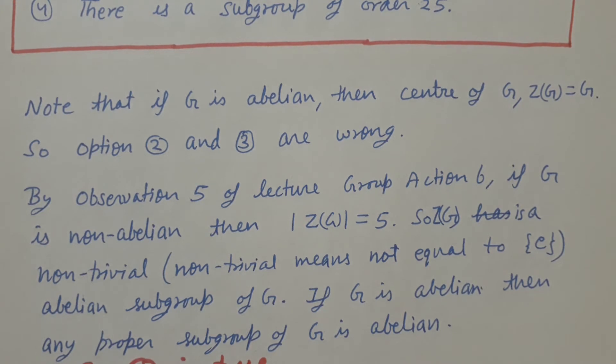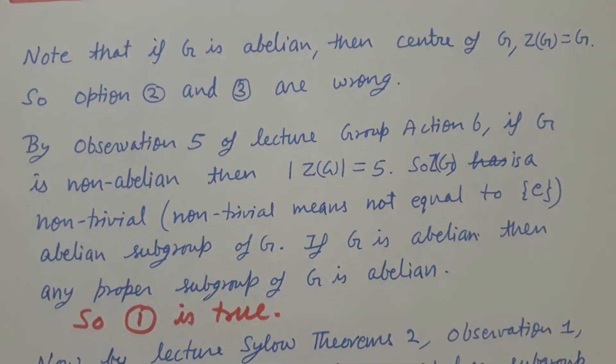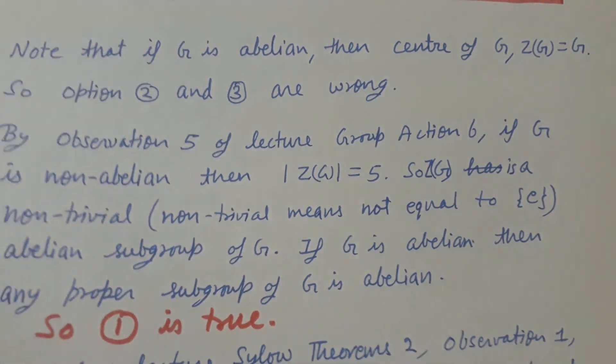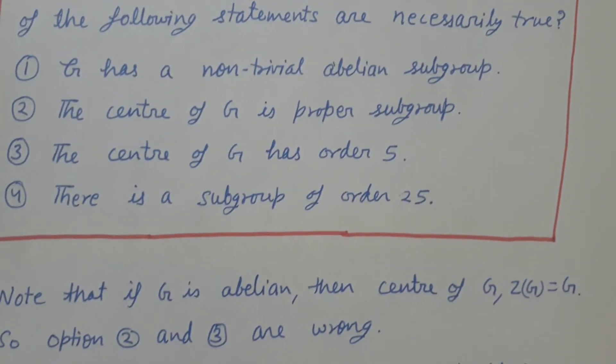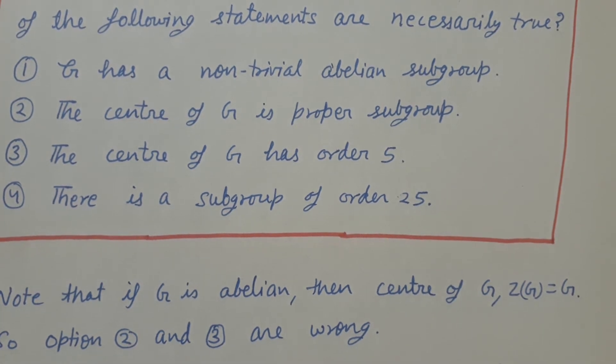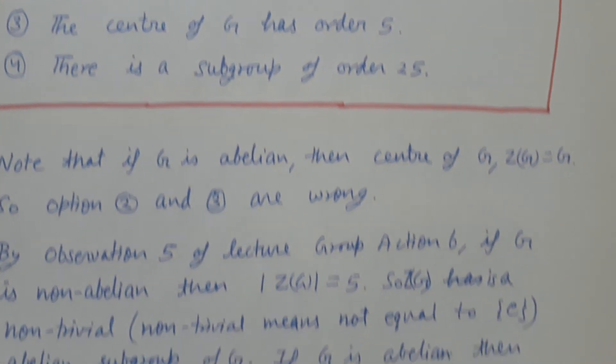If G is abelian, then any proper subgroup of G is abelian. So the first option is true, which is saying that G has a non-trivial abelian subgroup. In any case, whether G is abelian or non-abelian, G has a non-trivial abelian subgroup.